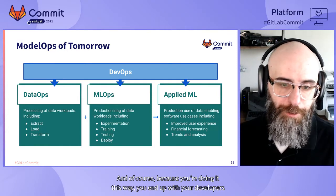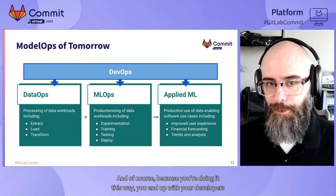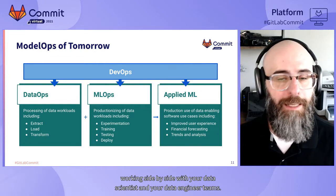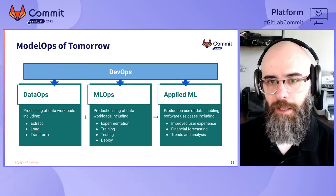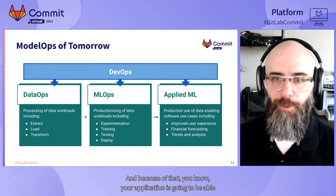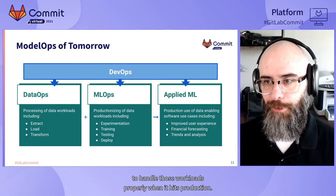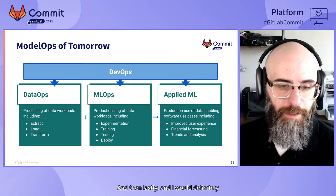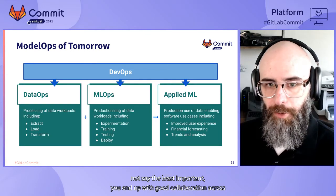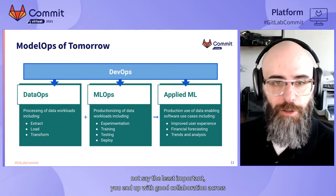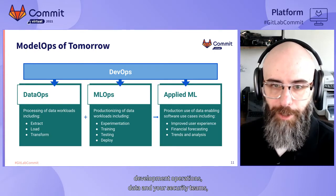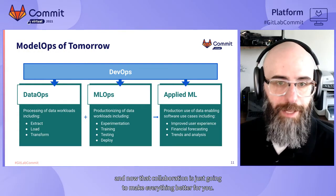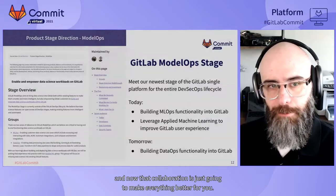Because you're doing it this way, your developers work side by side with your data scientists and data engineer teams, ensuring your application can handle those workloads properly when it hits production. And lastly, you end up with good collaboration across development, operations, data, and your security teams — and that collaboration is going to make everything better.